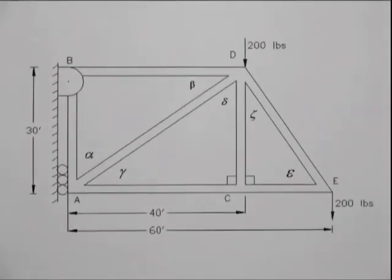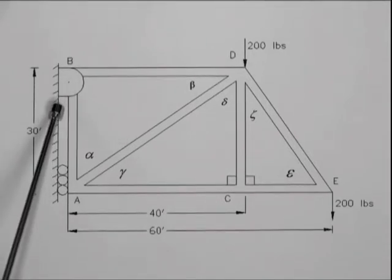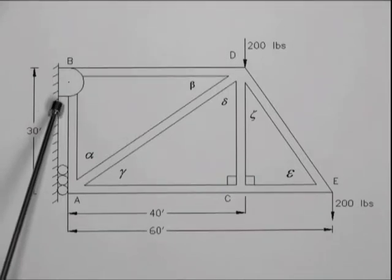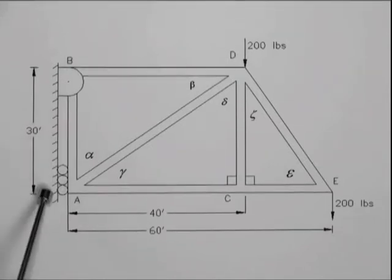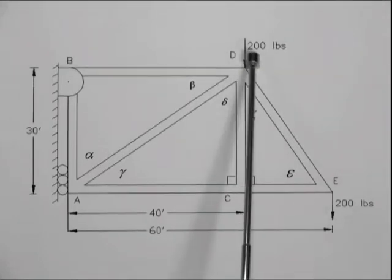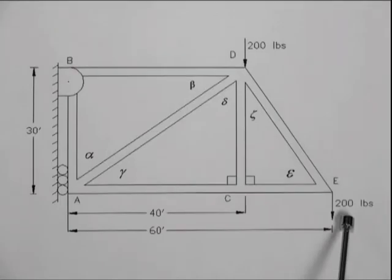In part two, we will examine a more complex truss. This truss is hanging from a wall. At the top of the truss on the left-hand side, we have a pin, which constrains the movement of the truss in the Y and X directions. We also have a roller which constrains the motion of the truss in the X direction. We have two external forces applied to the truss, both of magnitude 200 pounds in the downward direction — the first at point D and the second at point E.